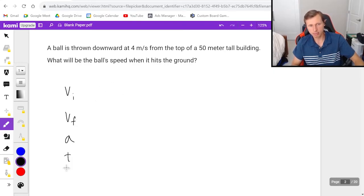So with that in mind, I'm going to use the same thing I did before, write out the five kinematic variables and ask myself what do I know and what do I not know? So first, v initial says it right here. It's 4. V final is what I'm solving for.